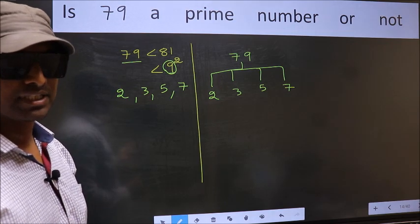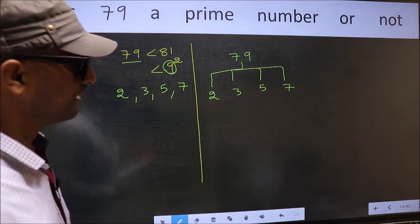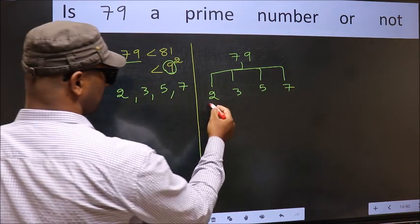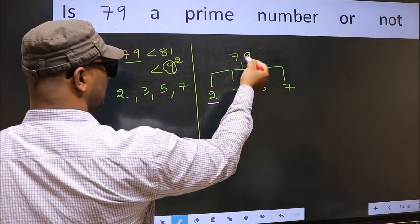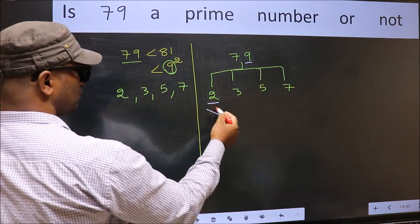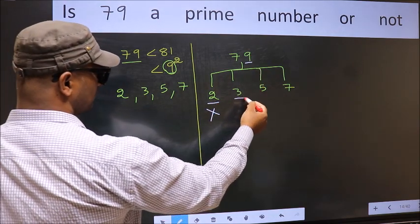Let us check with the divisibility. Starting with the number 2: last digit 9 is not even, so this is not divisible by 2. Next, number 3.